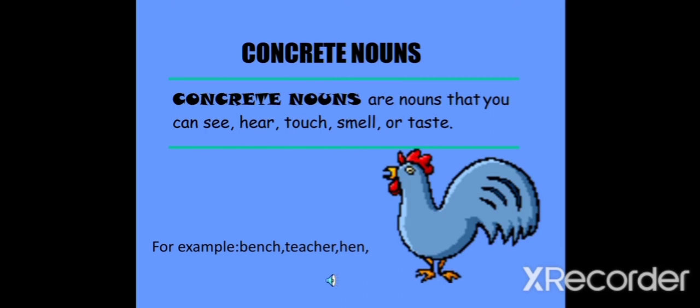Examples of concrete nouns: bench, teacher, hen, dentist, kittens, people. You can see them, you can hear them. So these are all concrete nouns.